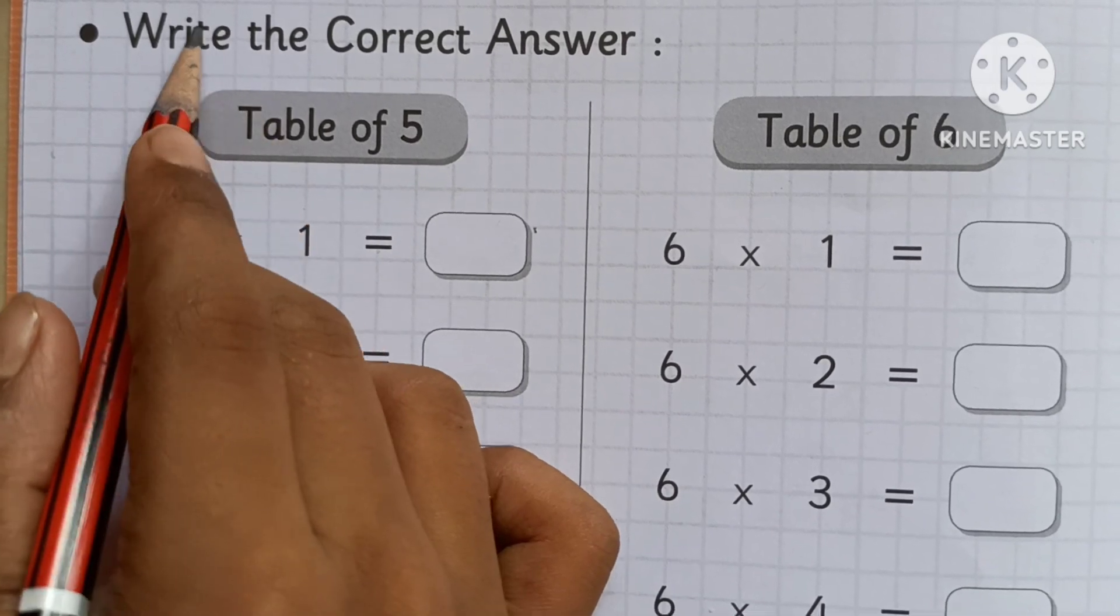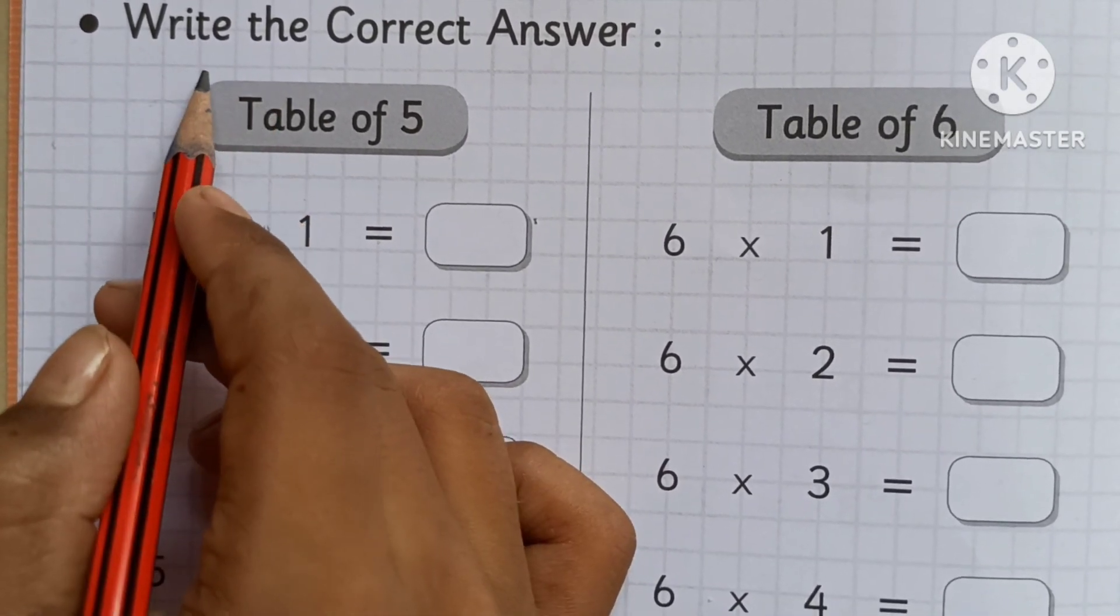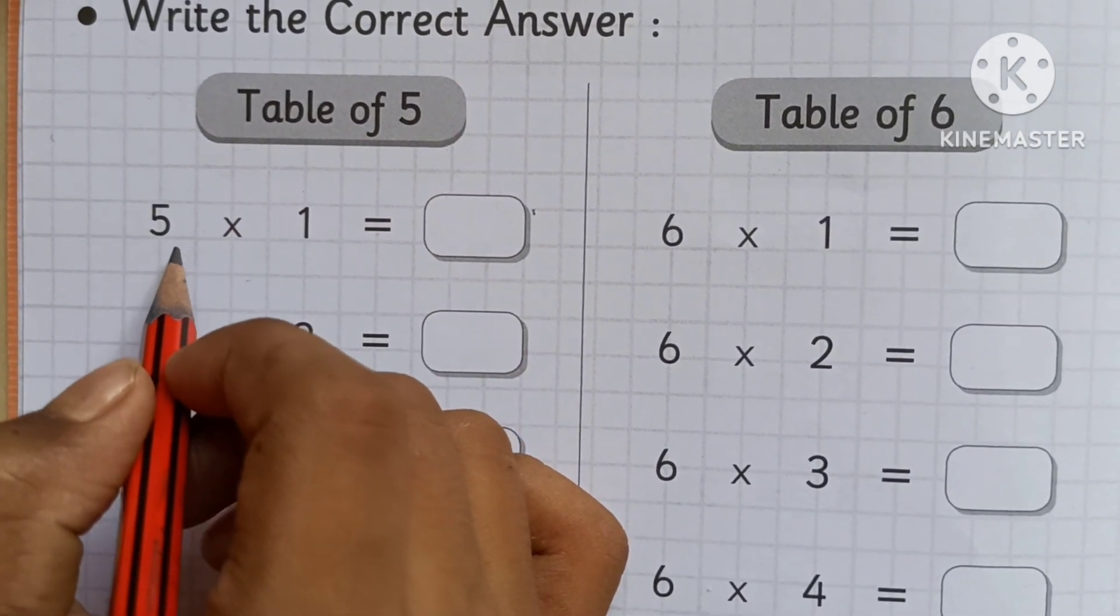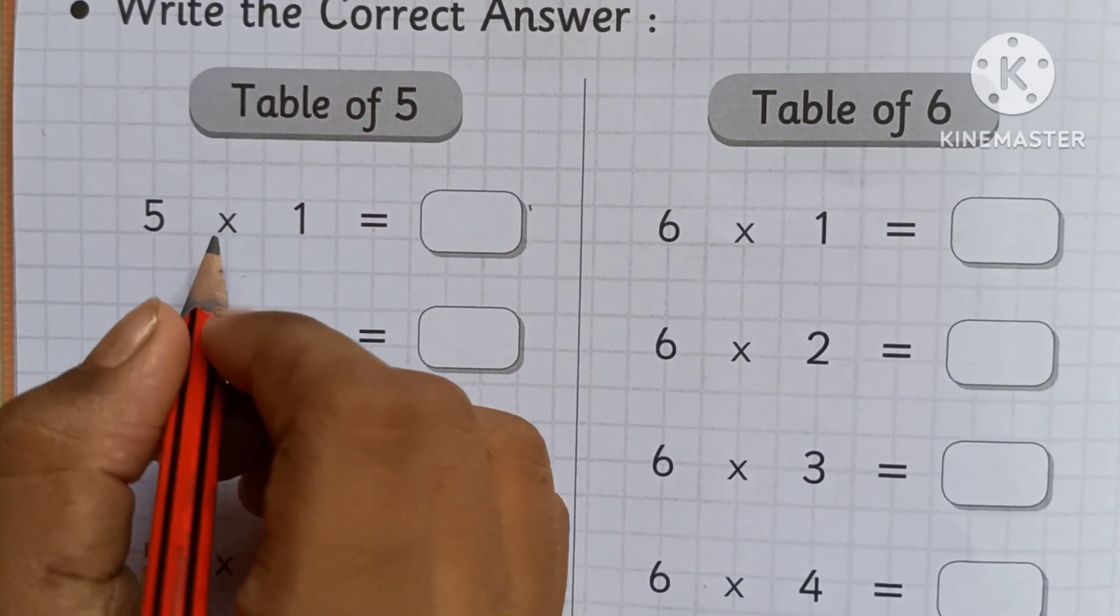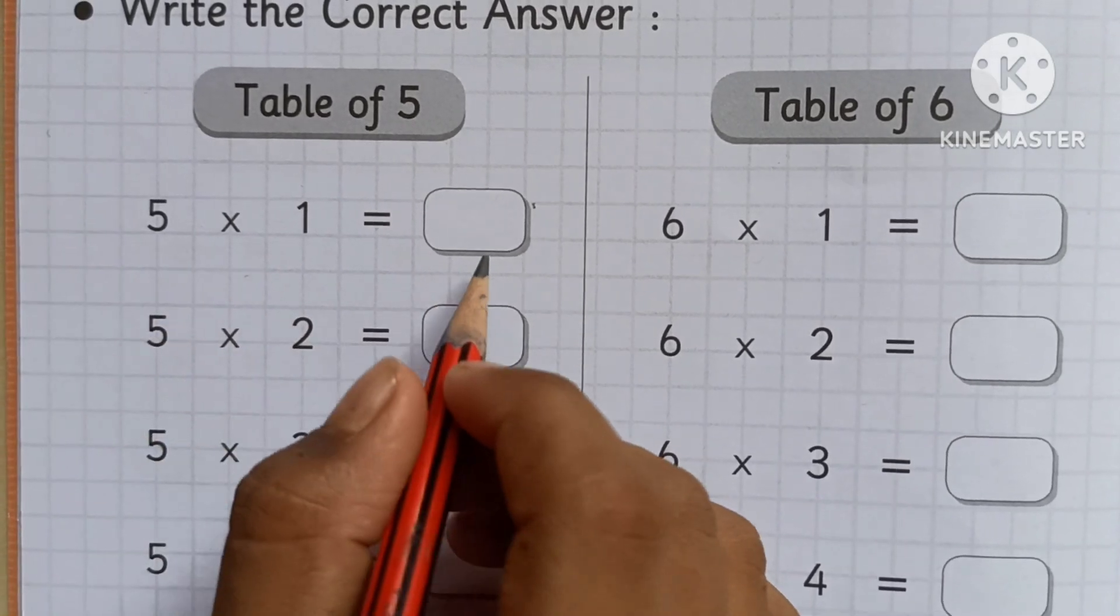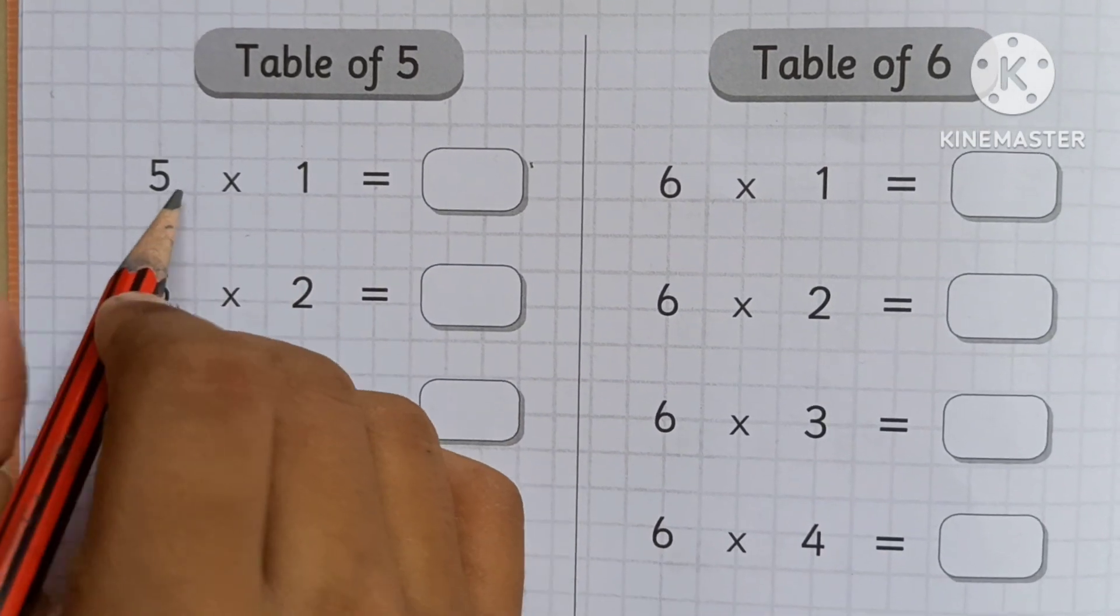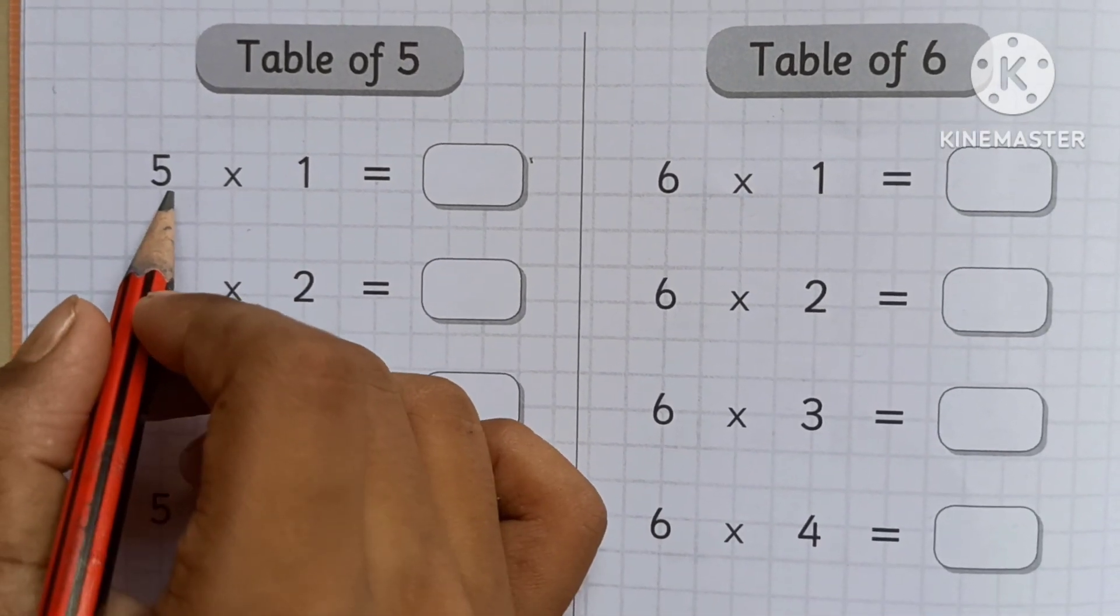The topic name is write the correct answer. So if you remember the table you will automatically write in the box. This is first standard tick tock table. Let's start. Now you have to know the answer and write, okay?